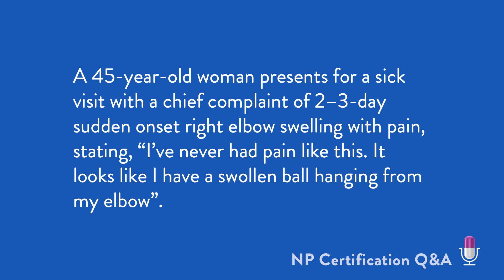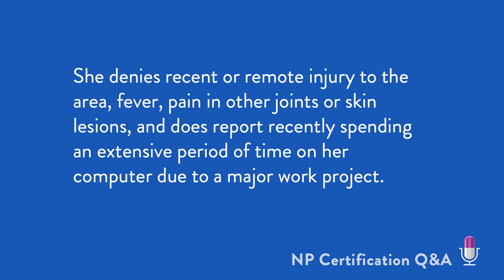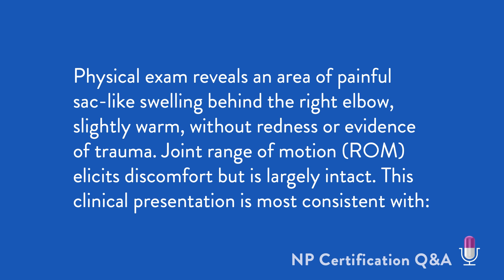A 45-year-old woman presents for a sick visit. She has a chief complaint of a two- to three-day history of sudden onset of right elbow pain and swelling, stating, 'I've never had pain like this before. It looks like I have a swollen ball hanging from my elbow.' She denies recent or remote trauma to the area, fever, pain in other joints, or skin lesions, but does report spending an extensive amount of time on her computer recently due to a major work project. Physical exam reveals an area of painful sac-like swelling below the right elbow that's slightly warm without evidence of redness or trauma. Range of motion of the joint elicits discomfort, but is largely intact.